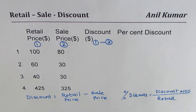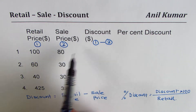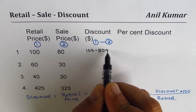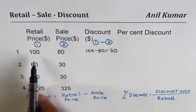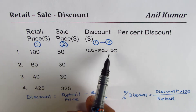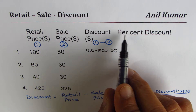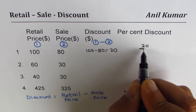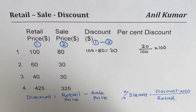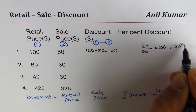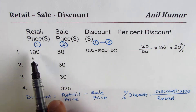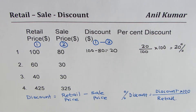Let's start working through the examples. For the first example, discount is 100 minus 80, which is $20. So $20 is the discount when an item priced at $100 is sold at $80. To find percent discount, we take 20 divided by 100, times 100 — the hundreds cancel and we get 20 percent discount. You can see clearly that a $20 discount on $100 is 20 out of 100, which is 20 percent.